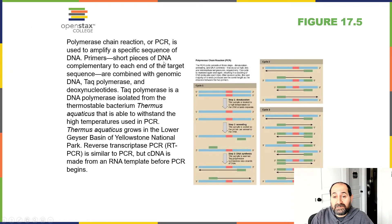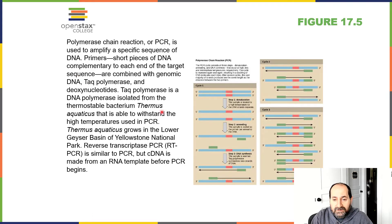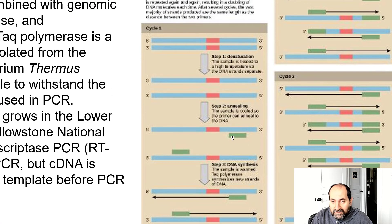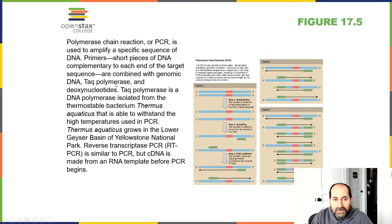One of the most interesting techniques to come about was PCR. You may have heard of PCR — it stands for polymerase chain reaction. It's a technique to amplify a specific sequence of DNA. You have to take short primers — short pieces of DNA which are complementary to each end of the target sequence you're trying to amplify. Those short pieces of DNA attach to each flank of the DNA you are trying to amplify. You then use a thermocycler, a device that heats up and then cools down the DNA, allowing the strands to separate from one another.